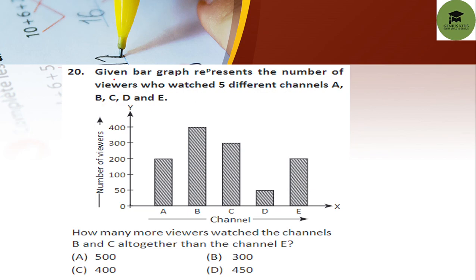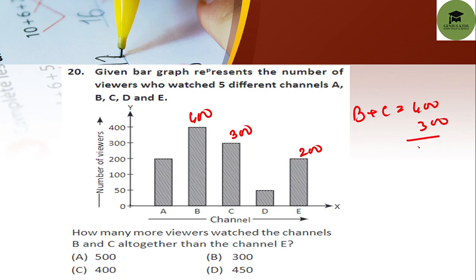Last question: the given bar graph represents the number of viewers who watched 5 different channels A, B, C, D, and E. How many more viewers watched channels B and C together than channel E? Channel B has 400 viewers, channel C has 300, and channel E has 200. B plus C equals 700. The difference is 700 minus 200 equals 500. So option A is your correct answer.